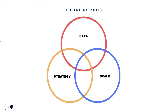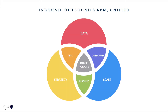There are three main elements of Future Purpose: ABM, campaign data strategy, and scale. Future Purpose also unifies inbound, outbound, and account-based marketing into a single cohesive marketing program. Future Purpose is a methodology — a process to follow that is built on the blend of these elements.